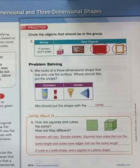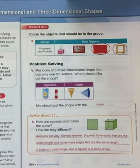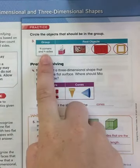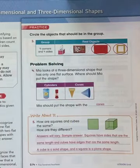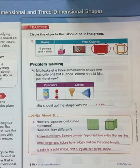Turn the page. Look at number three. Four corners and four sides. What has four corners and four sides?